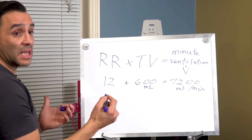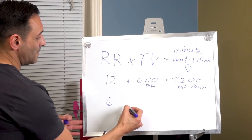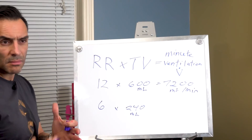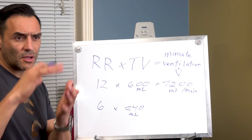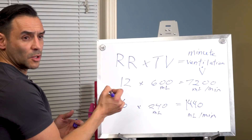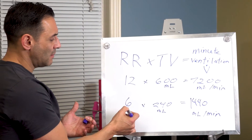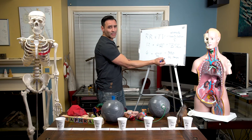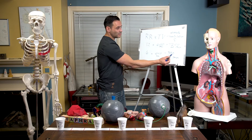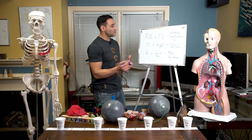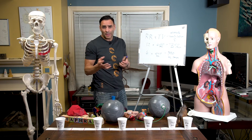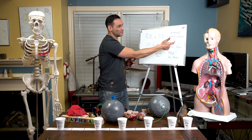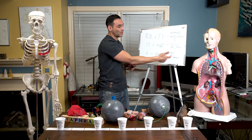In an overdose situation, you're breathing less often — let's say half as much: six times a minute. Six times a minute, times only 240 milliliters per breath — the tidal volume is way down. So you're breathing half as often, with a much lower tidal volume, and the amount of air going into the lungs in a minute is only 1440 milliliters. In mathematical terms, that's what's happening with a fentanyl overdose: minute ventilation has dropped from 7200 to 1440.